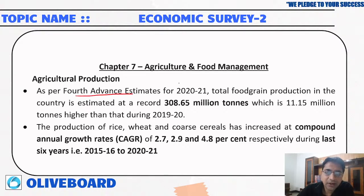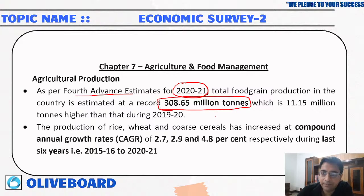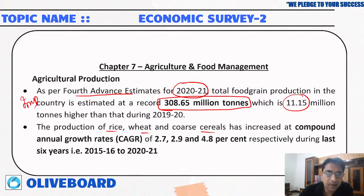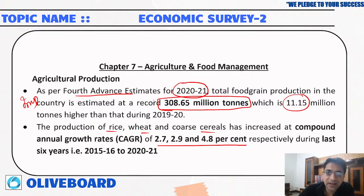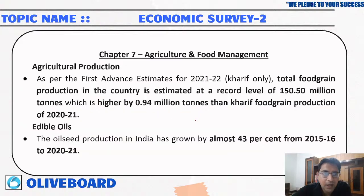The fourth advance estimate for 2020-21 puts total food grain production at a record 308.65 million tons, which is 11.15 million tons higher than the previous year. As per the first advance estimate for Kharif only, total food grain production is estimated at a record 150.5 million tons.